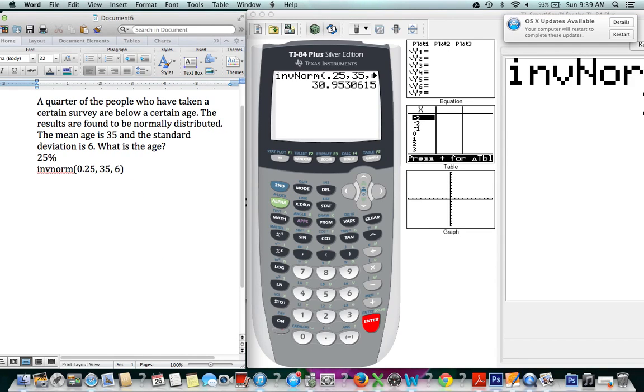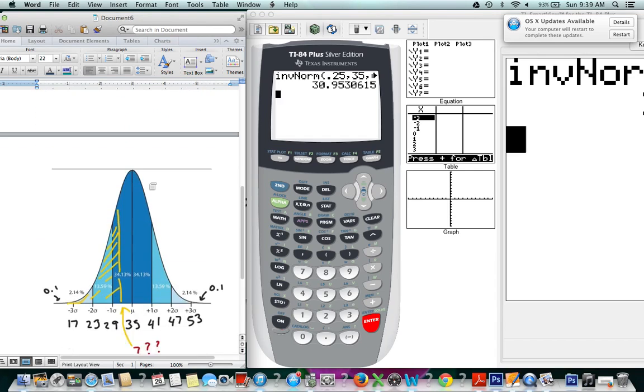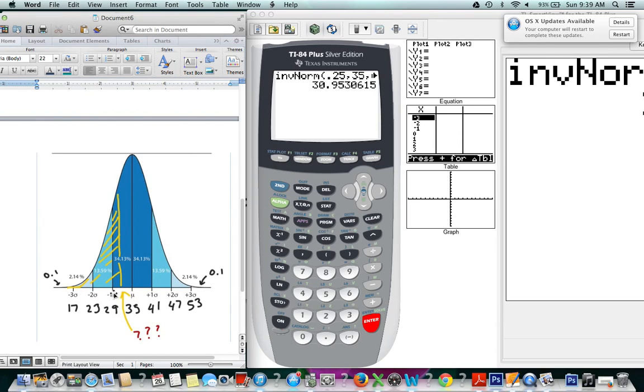Now does that make sense according to our graph? Let's see, 31 years old. We expected our answer to be between 29 and 35, was some unknown number, and 31 totally makes sense because it is between 29 and 35, closer to 29.